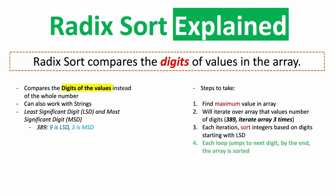You're going to need to know what the LSD and MSD are. LSD is the least significant digit and MSD is the most significant digit. So if we have the number 389, 9 is the least significant digit and 3 is the most significant.